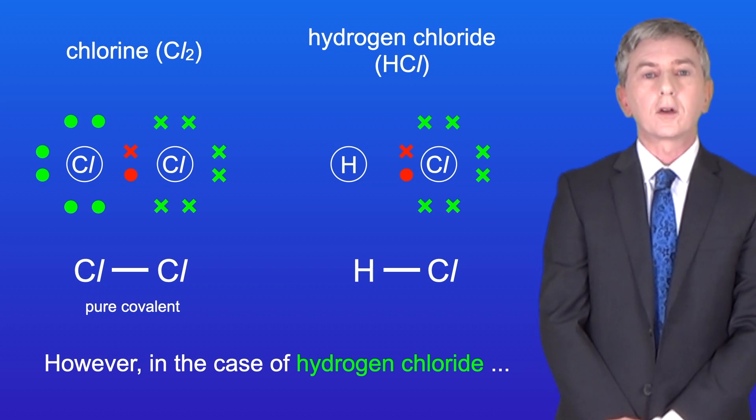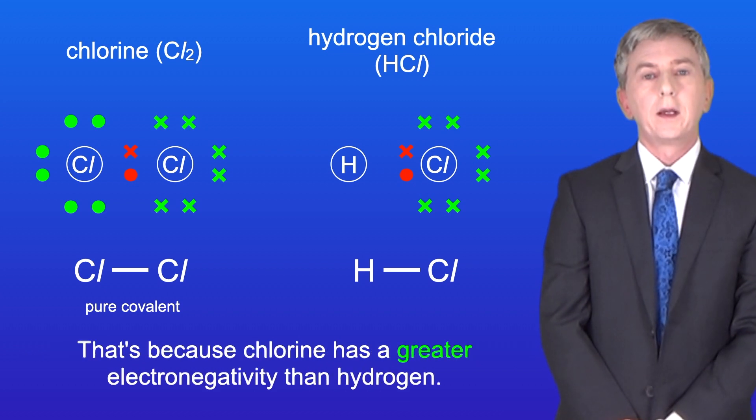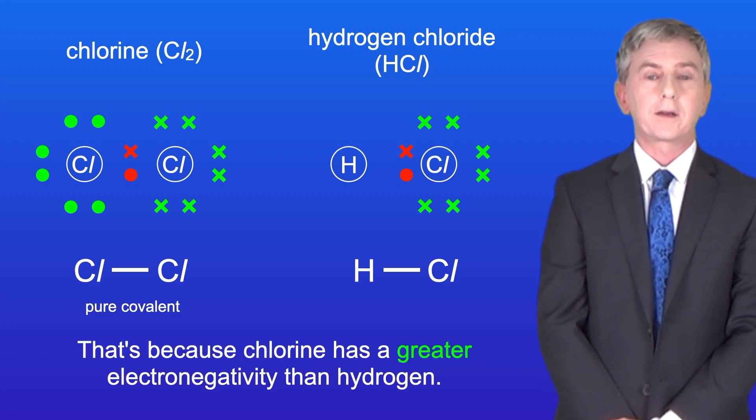However, in the case of hydrogen chloride, the electron pair is much closer to the chlorine atom than the hydrogen atom, and that's because chlorine has a greater electronegativity than hydrogen.